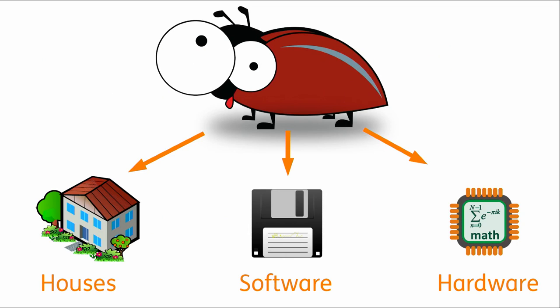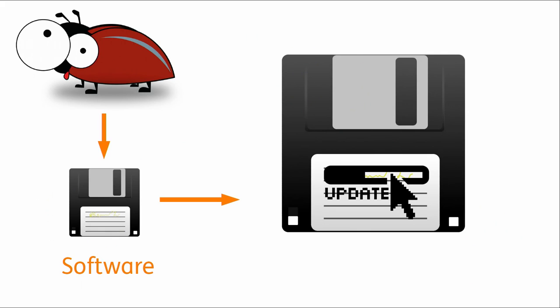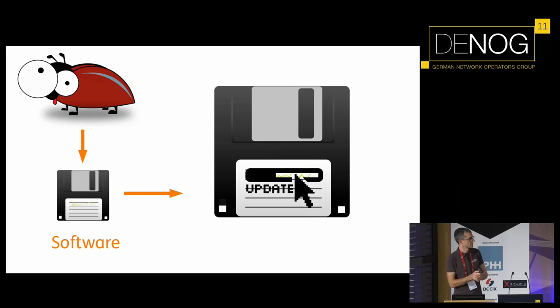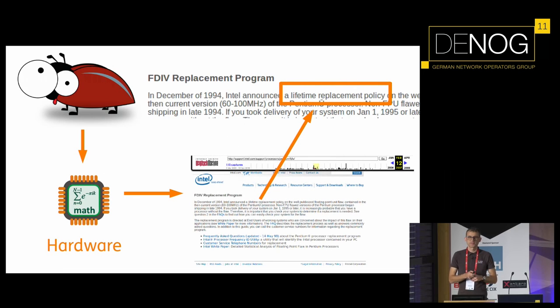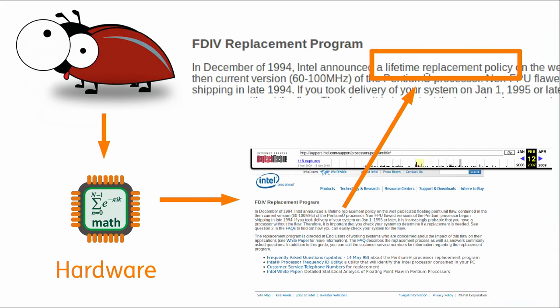There are different kinds of bugs — mainly three of them. The first kind are bugs that attack your house, which I won't cover in detail here. Then there are bugs which attack software, and bugs which attack hardware — those two are what I will cover. For bugs attacking software it's a relatively easy task: when bugs are reported, the developer can issue an update and provide it online. Very easy way to fix things. But what can you do when you have issues with your hardware?